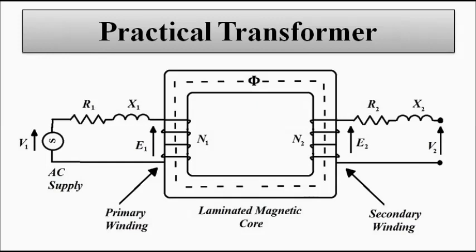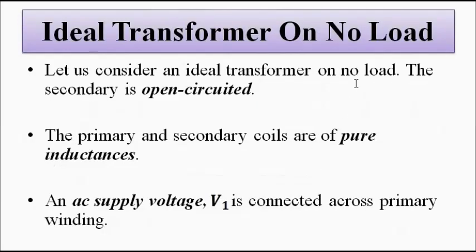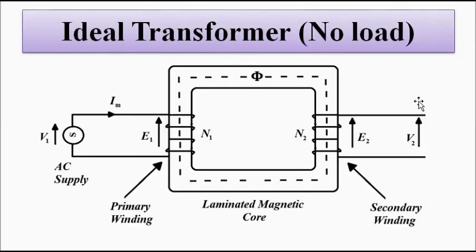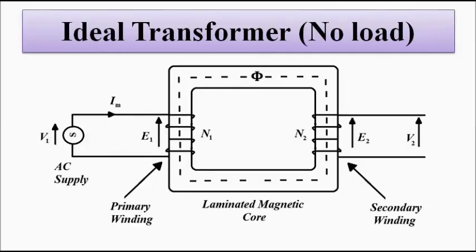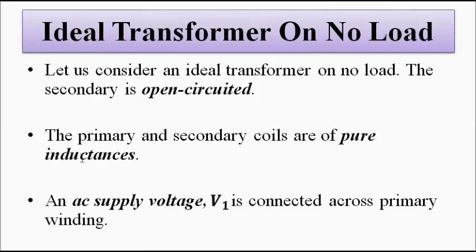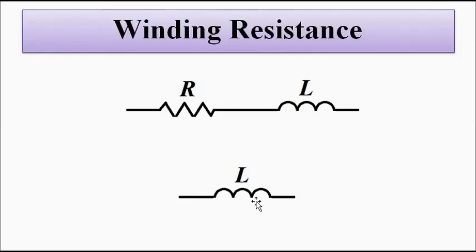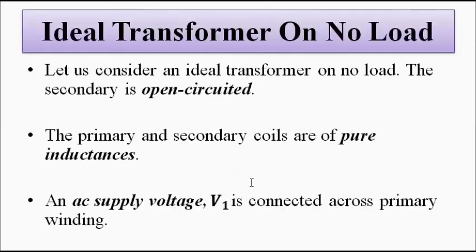First let us discuss about an ideal transformer, then we will go to the practical transformer in a separate video. Ideal transformer on no load means no load is connected across the secondary winding. The secondary is open-circuited. The primary and secondary coils are pure inductive coils — no winding resistance, only L, no R.